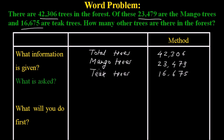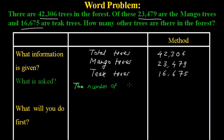This is a little bit interesting problem because the total number of trees are given, mango trees are given, and teak trees are given. Now we have to find out the number of other trees.